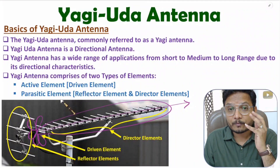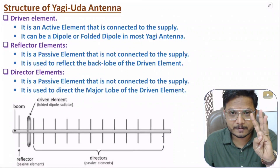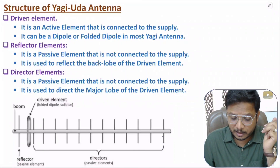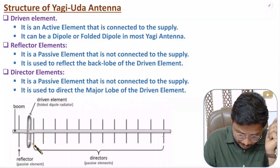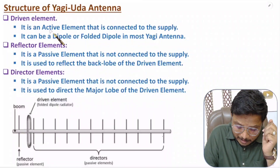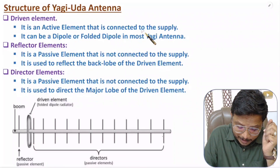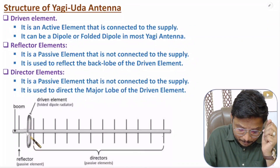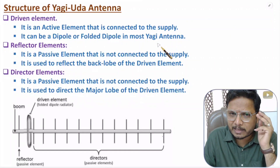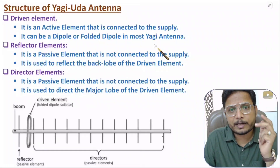Now I will explain the structure of Yagi-Uda antenna. It has three types of elements: driven element, reflector element, and director elements. The driven element is the active element — it is connected with supply. This driven element can be a dipole antenna or folded dipole antenna; in majority of Yagi antennas, you will observe this.